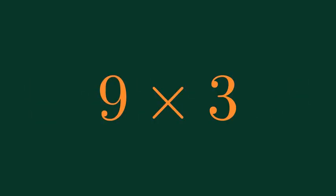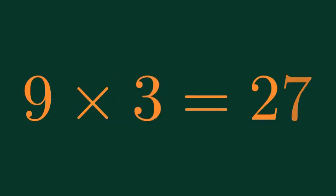What is 9 times 3? 9 times 3? 9 times 3 is equal to 27.